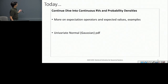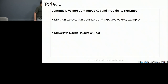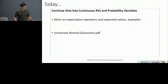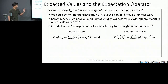Continuing our dive into density functions and continuous random variables, let's talk more about expectation operators and expected values and do some examples. Then we'll start talking about the univariate normal Gaussian PDF, which is very important in this class because a lot of estimation theory is built on the assumption that random variables obey a normal distribution. But let's talk about expectations and expected values first.